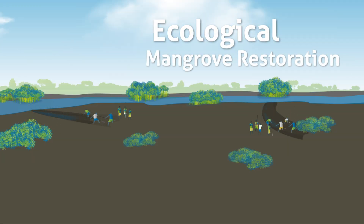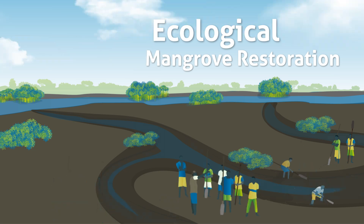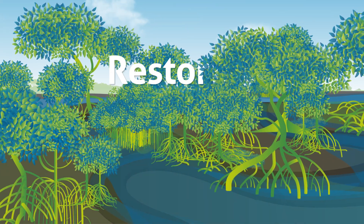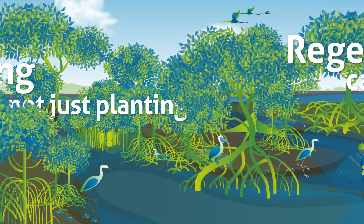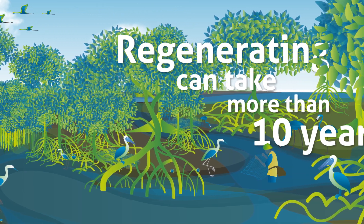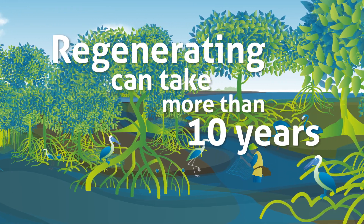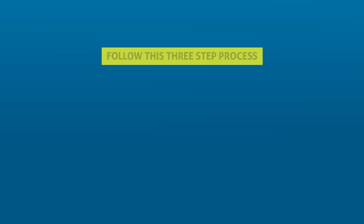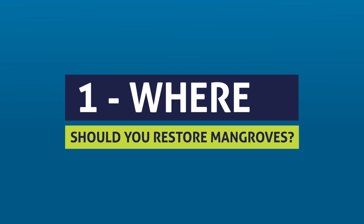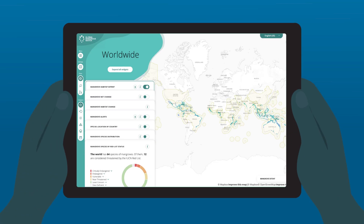Ecological mangrove restoration is about restoring conditions under which mangroves will thrive. When that happens, nature will do the rest, and mangroves will deliver their full value for people and nature. Follow this three-step process to successfully restore mangroves. Where should you restore mangroves? Start with assessing whether mangroves grew there before.